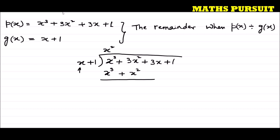Now we do the normal division step and subtract. We reverse the symbols: both terms become negative. x³ − x³ cancels out. Then 3x² − x² gives us 2x². We bring down the remaining terms: 3x + 1.